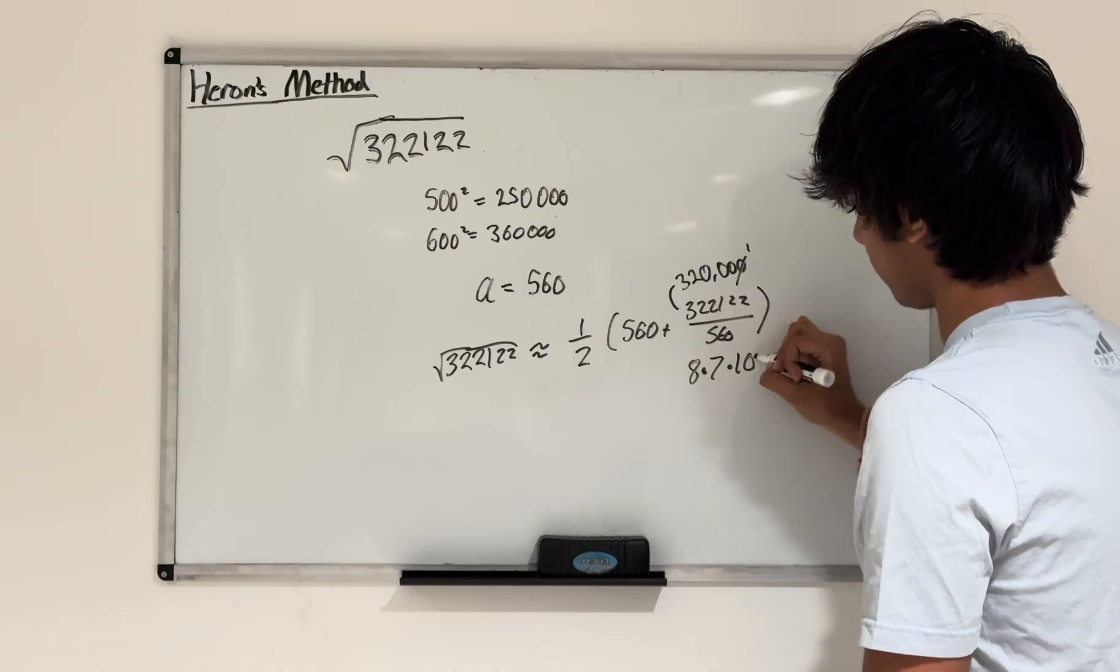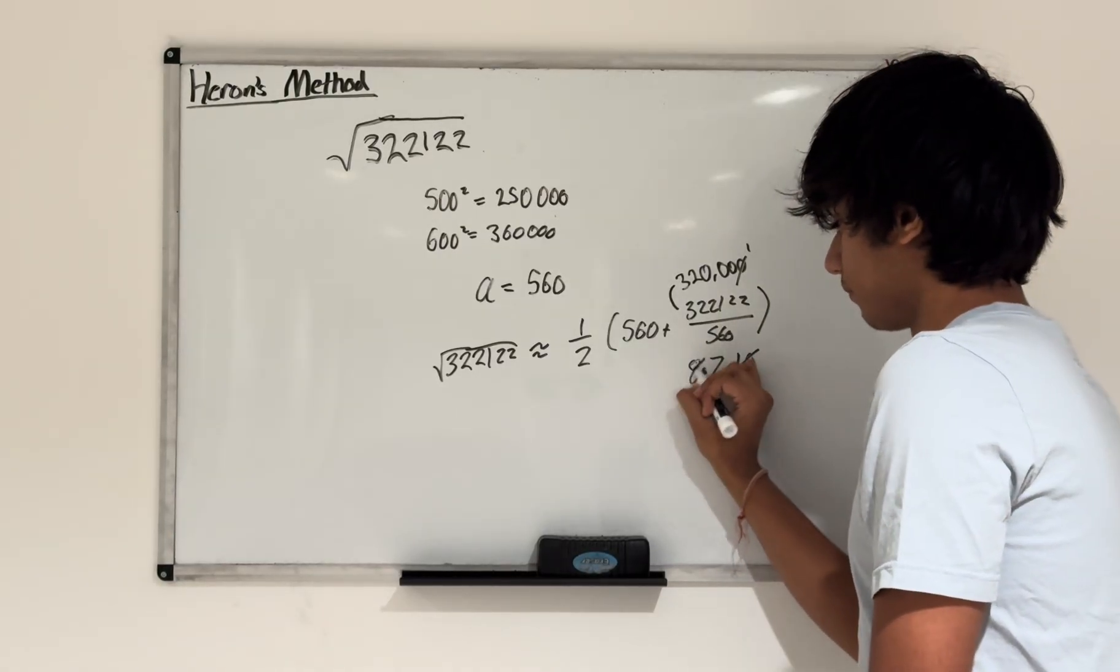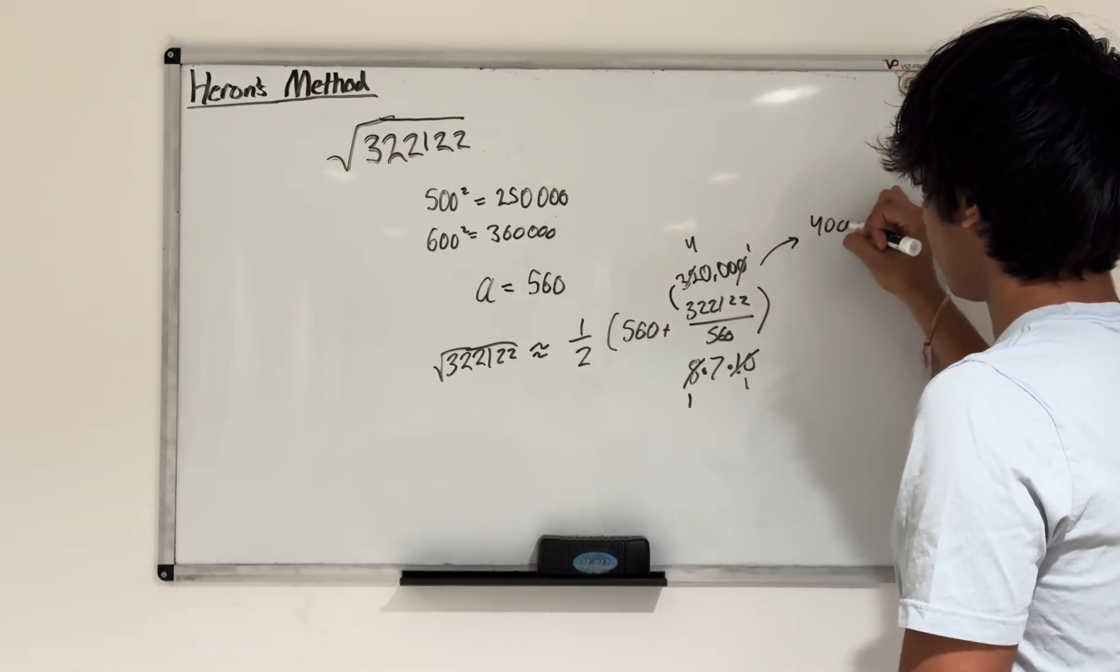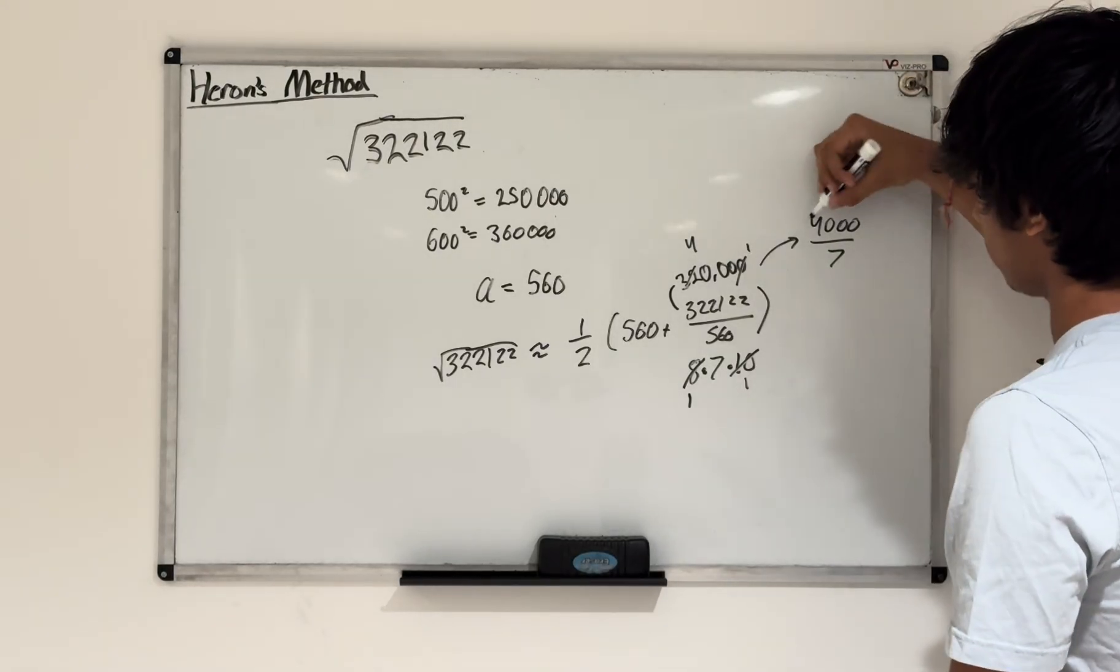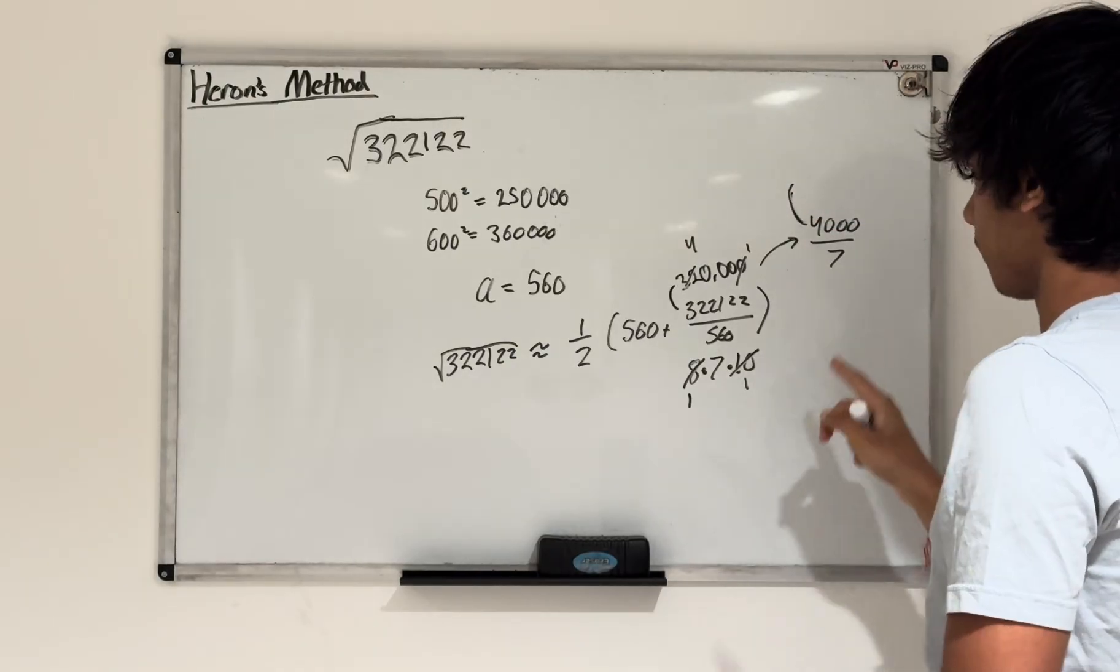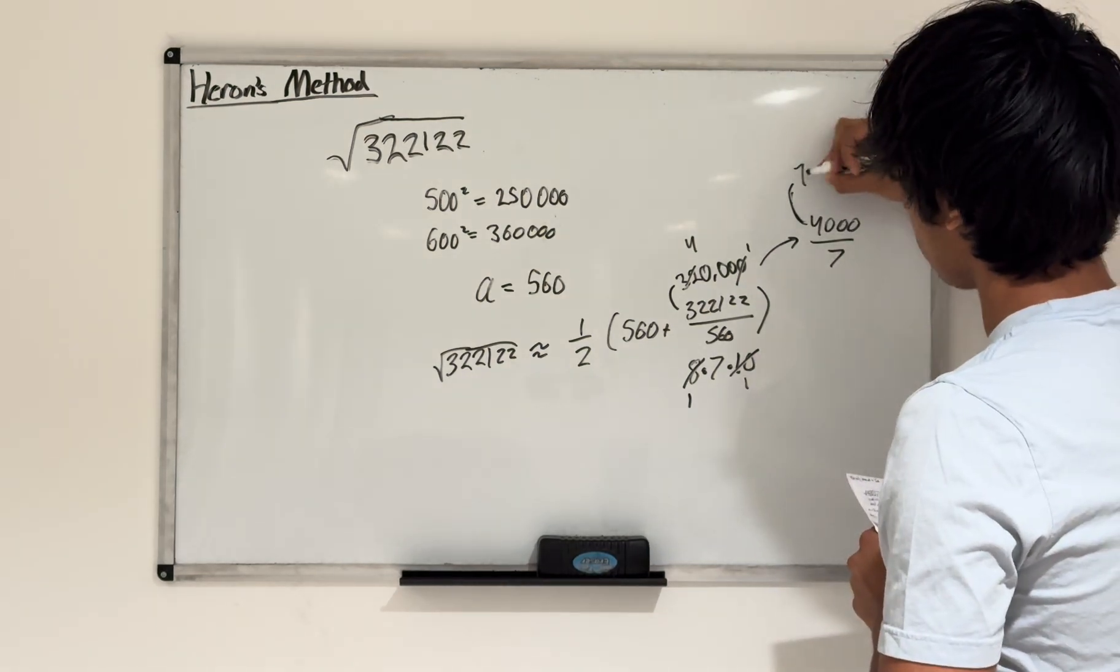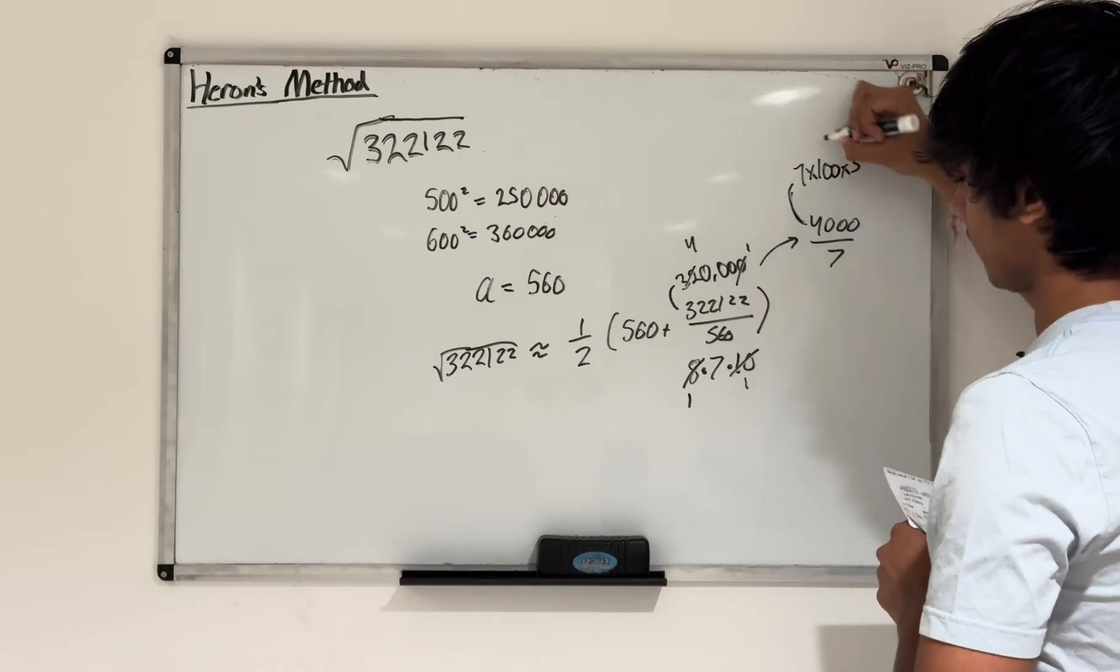Now we can cancel some stuff out. We can cancel out the zeros, so we're left with 0, 1, 1, and we can cancel out the eights. So this is 1, this becomes 4. What we're left with is 4,000 divided by 7. Looking at 4,000, I can do 7 times 100 times 5, that gives you 3,500.